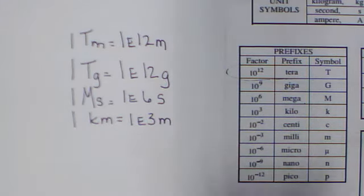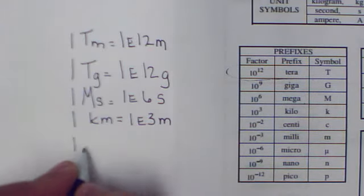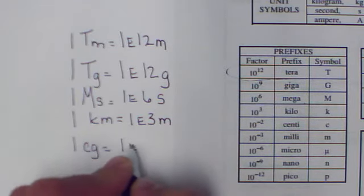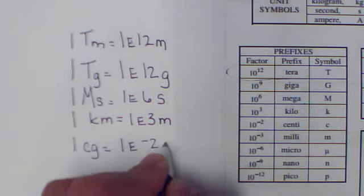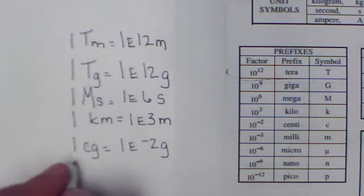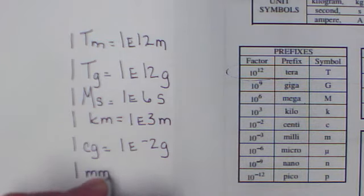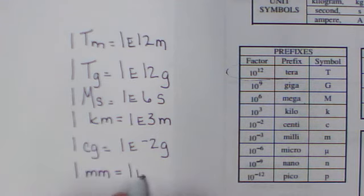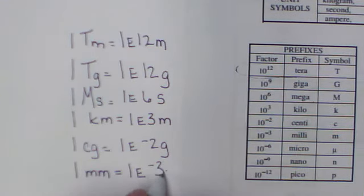Okay, moving down the list to the negatives. I could say that 1 centigram is equal to 1E negative 2 grams. Let me do a couple more and then I'll get to my point. 1 millimeter is right here. It's equal to 1E negative 3 meters.